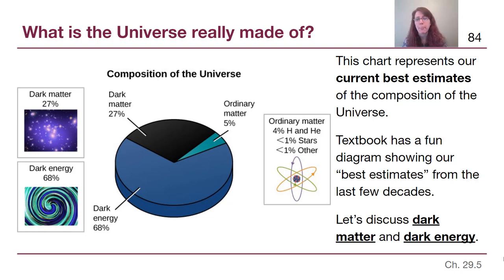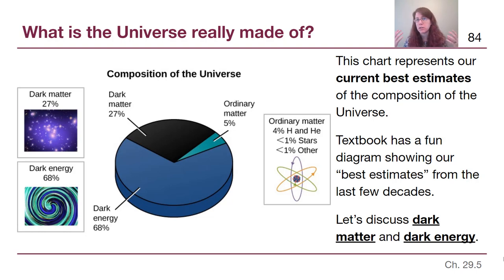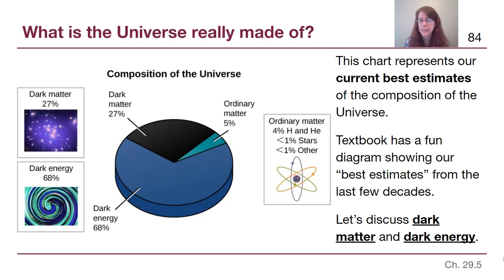Looking at this pie chart, ordinary matter is the smallest portion. Ordinary matter refers to stuff made of atoms — protons, neutrons, and electrons. That includes us, but most of the ordinary matter is just clouds of gas and dust out there, not even in stars or any dense structure, but diffuse and spread out through the universe as hydrogen and helium.